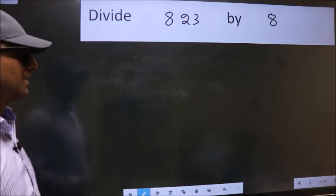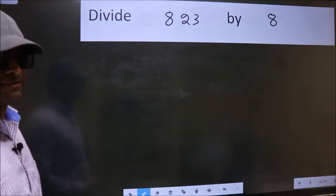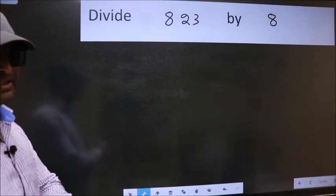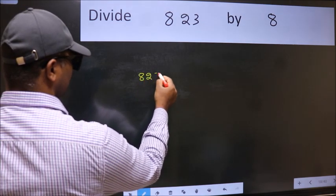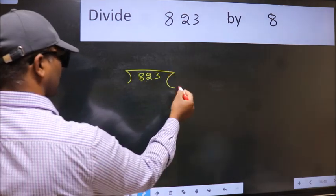Divide 823 by 8. To do this division, we should frame it in this way. 823 here, 8 here.